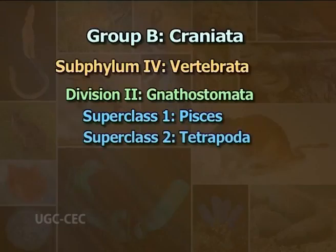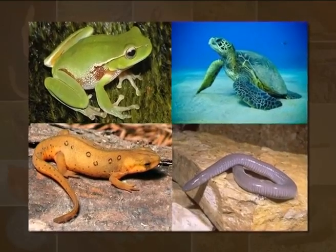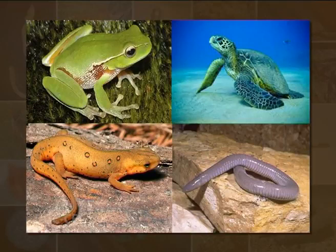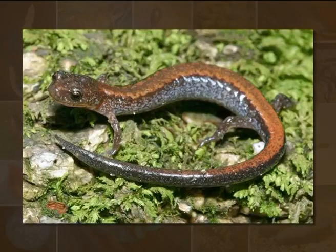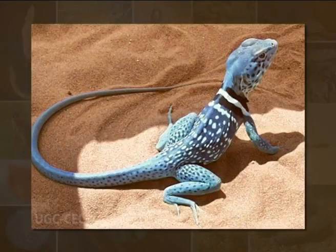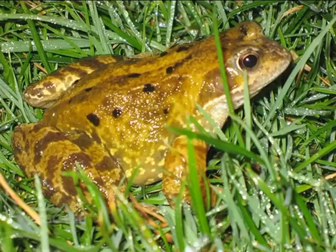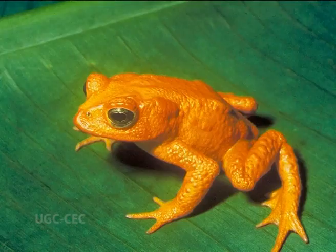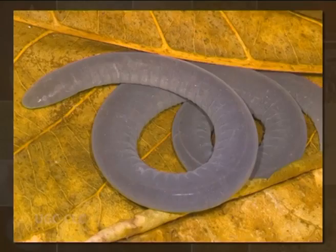Superclass 2: Tetrapoda — in Greek, tetra means four and podos means foot. These land vertebrates contain two pairs of pentadactyl limbs and cornified skin. This superclass has been divided into four major classes. Class 1: Amphibia — in Greek, amphi means both and bios means life. Amphibians are aquatic freshwater or semi-aquatic animals. They can breathe in air and water and are carnivorous, cold-blooded and oviparous vertebrates. Adults are typically terrestrial and respire by lungs. Body is divisible into head and long trunk. Neck and tail may be present or absent. Some amphibians are limbless.